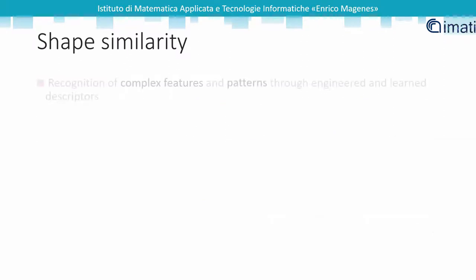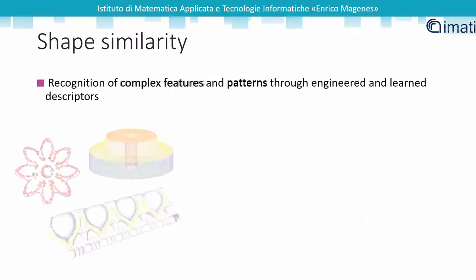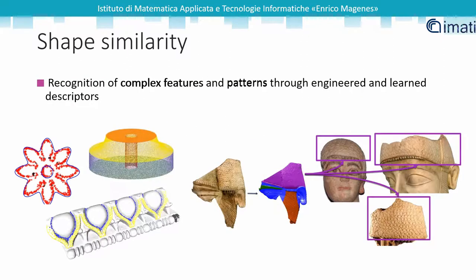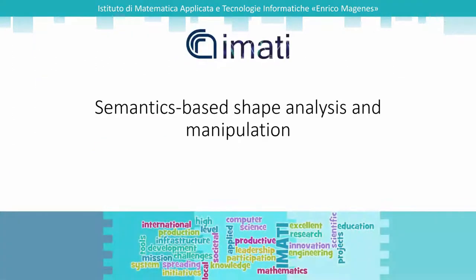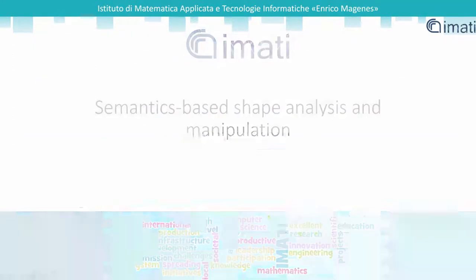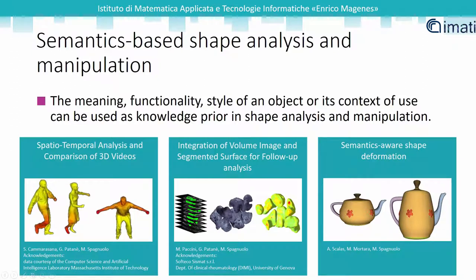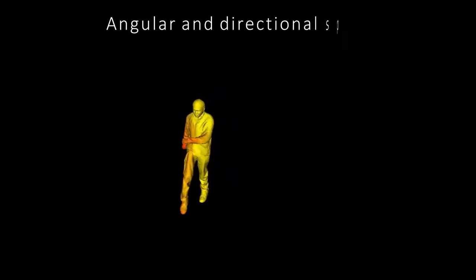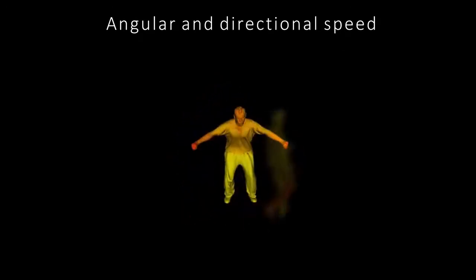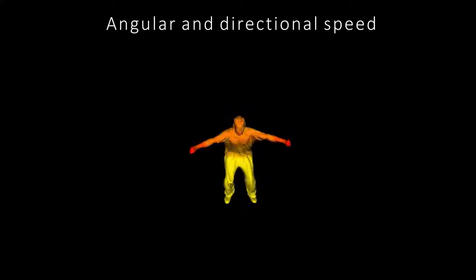Our ongoing research involves the recognition of complex local elements on 3D models using a plethora of different approaches. Semantics of a shape in its context of use can support analysis and manipulation. In 3D video sequences, the speed descriptor is used to represent the movement of corresponding parts across consecutive frames, to characterize and classify the action of the subject.